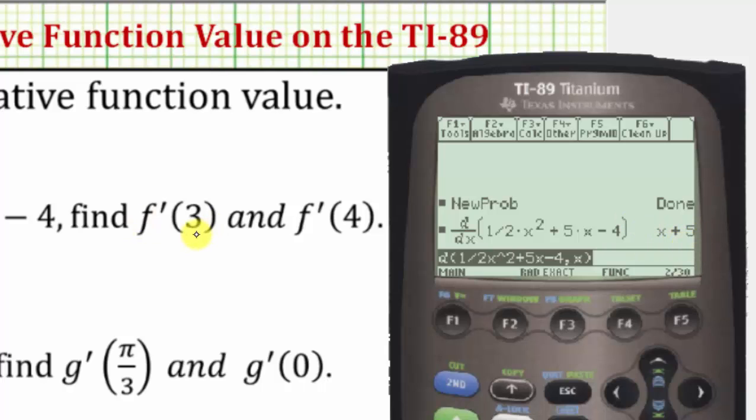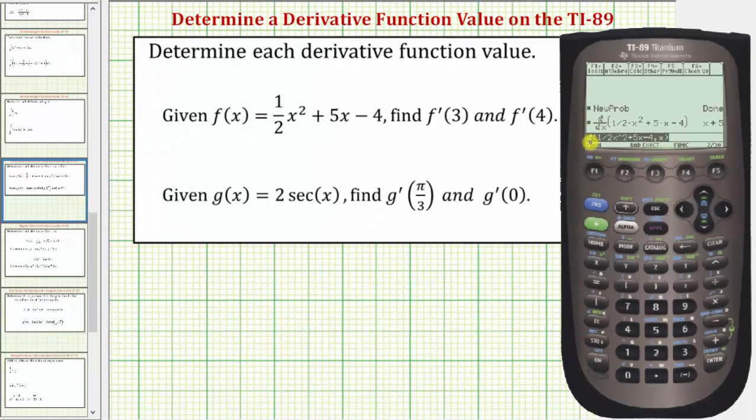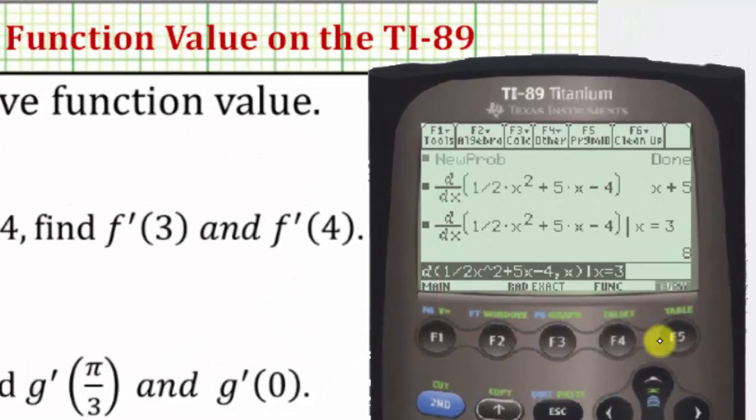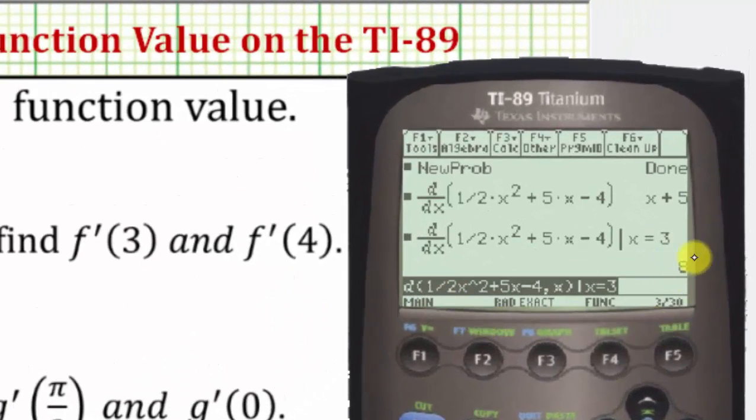We could determine f'(3) and f'(4) by substitution, but we can also edit our previous entry. Press the right arrow, then the vertical bar, and enter x = 3. The calculator will give us f'(3). Once we enter the vertical bar, enter x = 3 and press enter. Now we know f'(3) = 8.